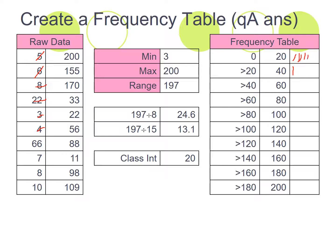66. 66 is going to come in here. 7, 8, 10, 200. 100 goes down here. 155 goes in here. 170 goes in here. 33 goes in here. 22 is here. 56 is here. 88 is here. 11 is here. And one other space. 98 is here. And 109 is in here.